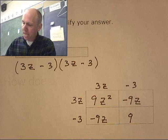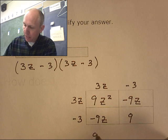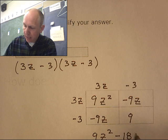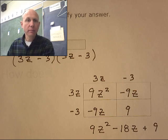Okay, let's simplify that down. 9z squared minus 18z plus 9. And that's it.